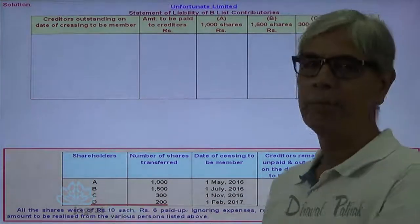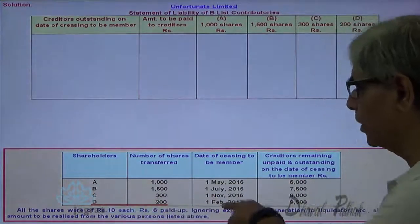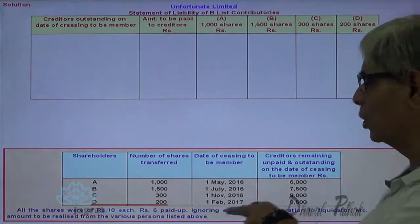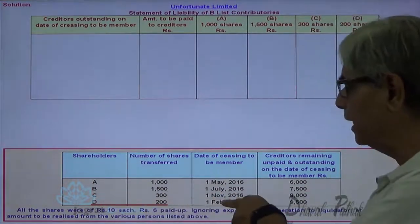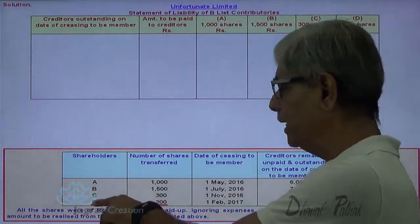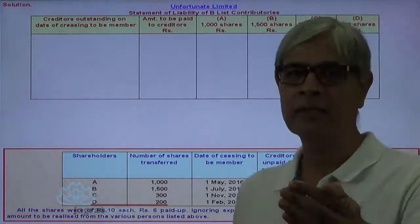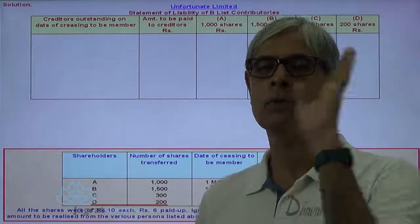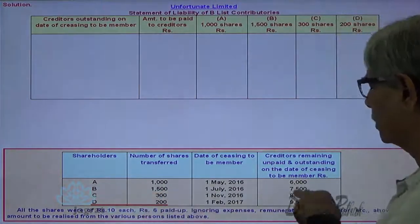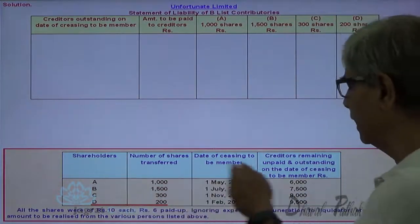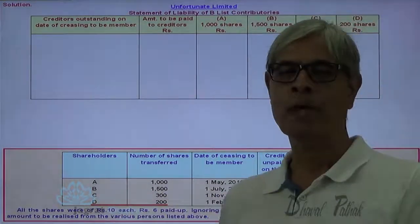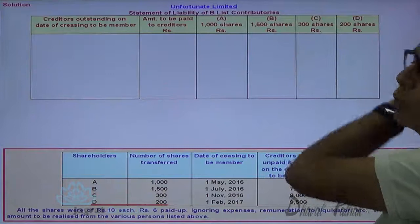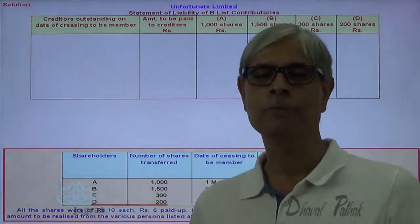D is a member. D has sold the shares on 1st of February 2017. So D is a member on 1st of May, on 1st of July, and on 1st of November. D ceased to be a member on 1st of February 2017. So whatever liability arose till 1st of February 2017, D is supposed to contribute for that. C has to contribute for the liability up to 8,000; the subsequent increase from 8,000 to 9,500, C cannot be asked to contribute. The contribution has to be made by A, B, C, D in the proportion of the number of shares held — 1,000 : 1,500 : 300 : 200.